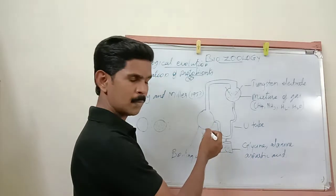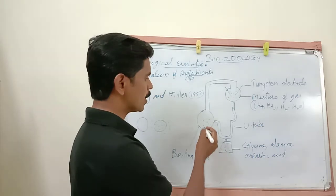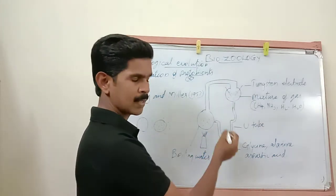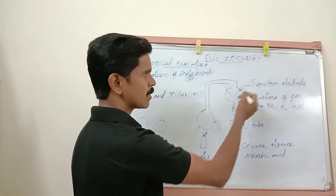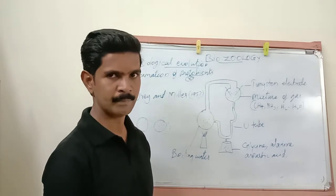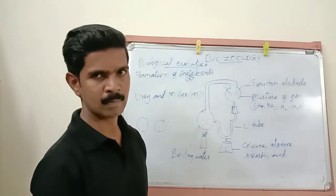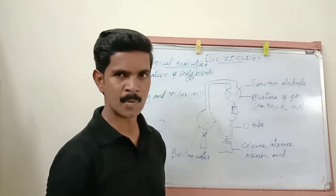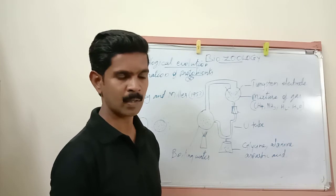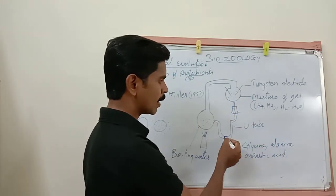At the bottom, one more flask containing boiling water was connected. The steam released from this boiling water was allowed to mix with the mixture of gases already circulating over the tungsten electrode. Then, in a condenser chamber, the steam underwent condensation, producing water. This water was collected in a U-shaped tube.